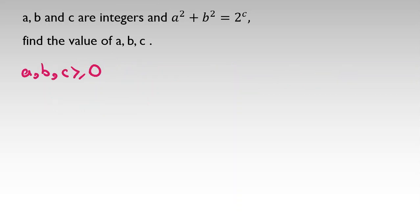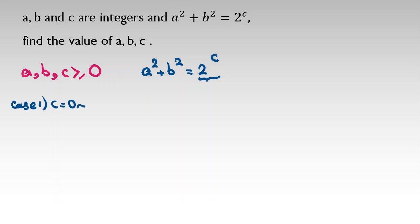Now we consider the parity of a and b — whether they are even or odd. We know a squared plus b squared equals two to the c. The right-hand side, two to the c, is even in all cases except when c equals zero.